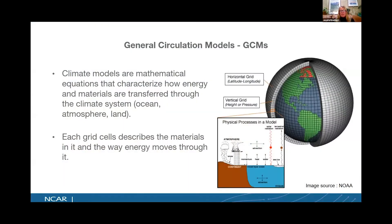Global climate models or general circulation models are mathematical equations that characterize how energy and materials are transferred through the climate system. They're made up of a number of grid cells and all these grid cells describe the materials within them and how energy moves through them.